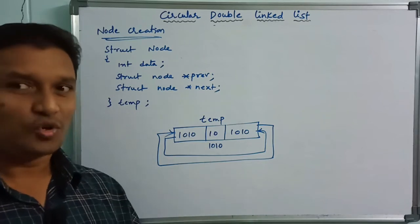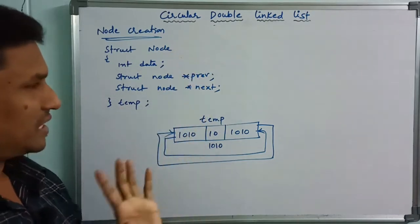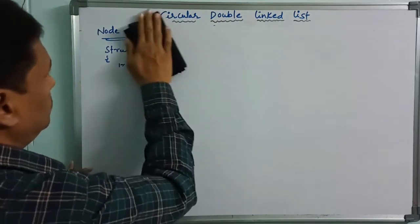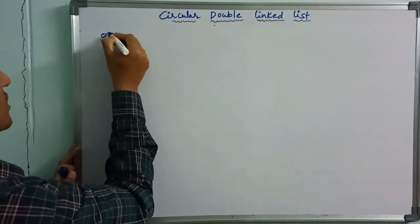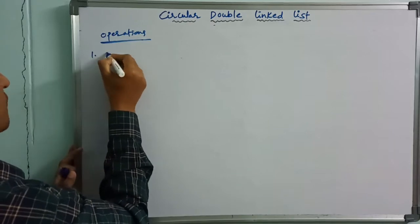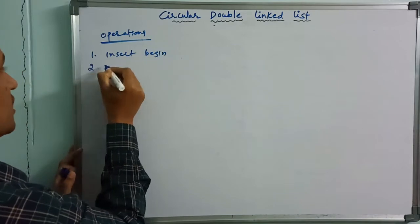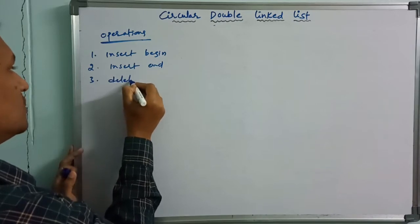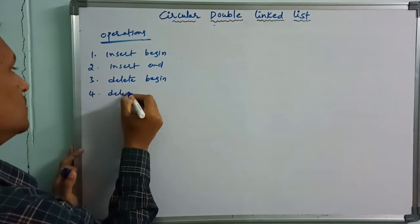A double linked list supports two-way traversal. Now let's look at operations. The operations are: first, insert begin; second, insert end; third, delete begin; fourth, delete end.